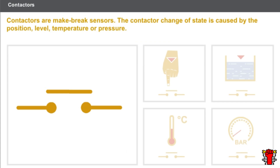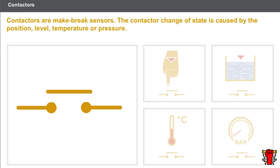Sensors are elements that convert into electrical form the physical quantities detected by them. Contactors are make-break sensors. The change of state opens or closes an electrical circuit. This contactor change of state is caused by various factors.